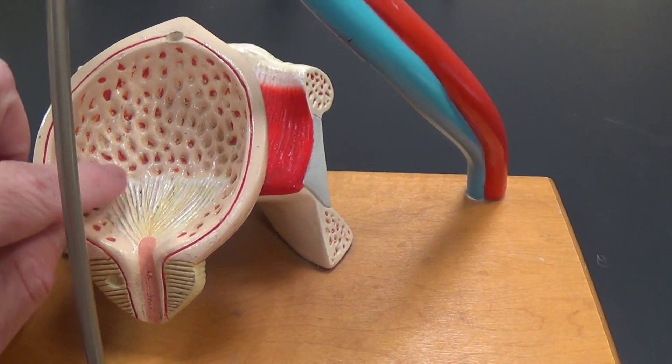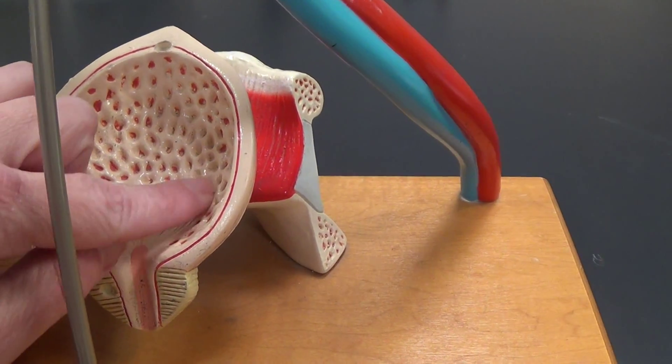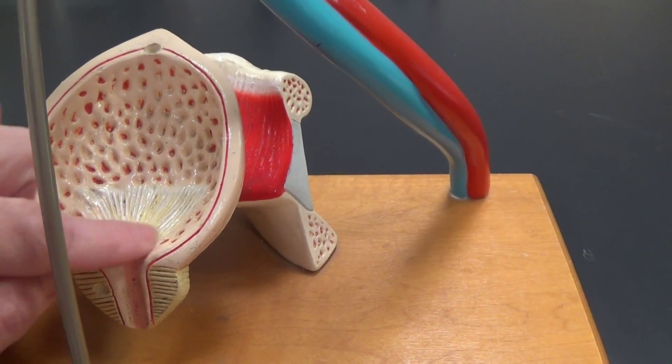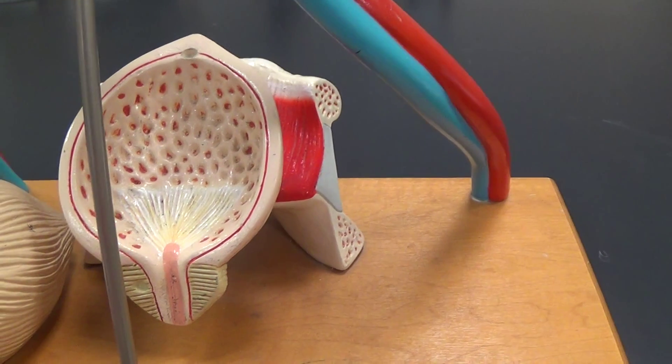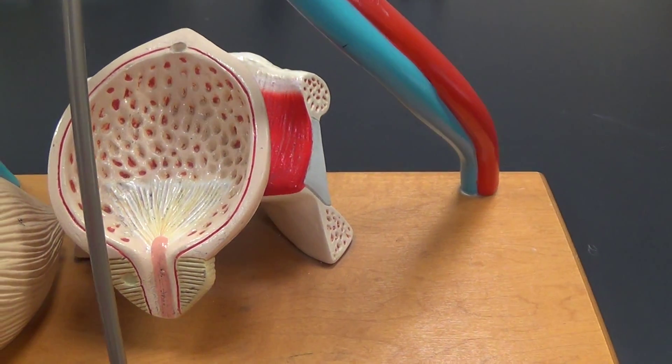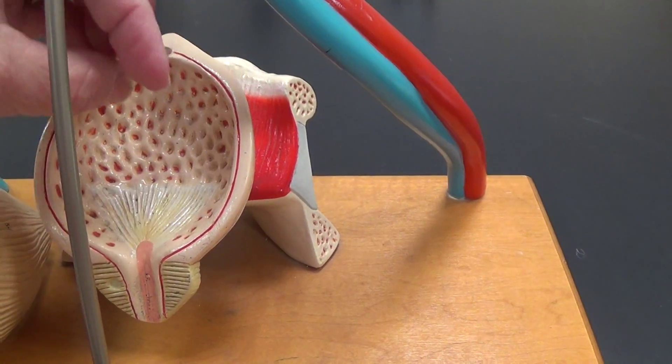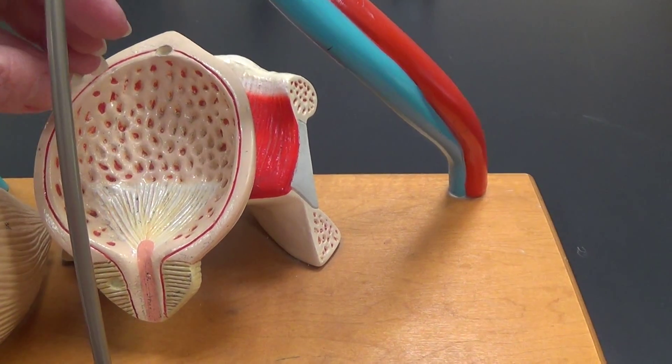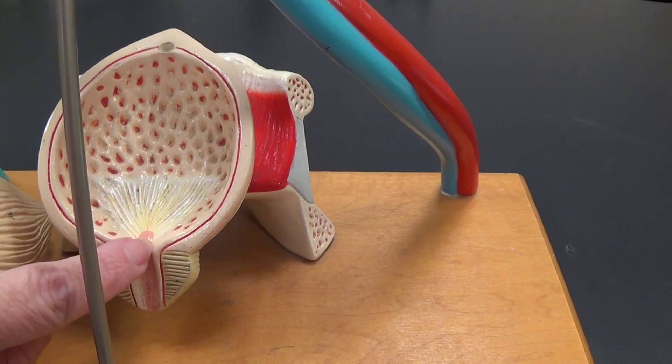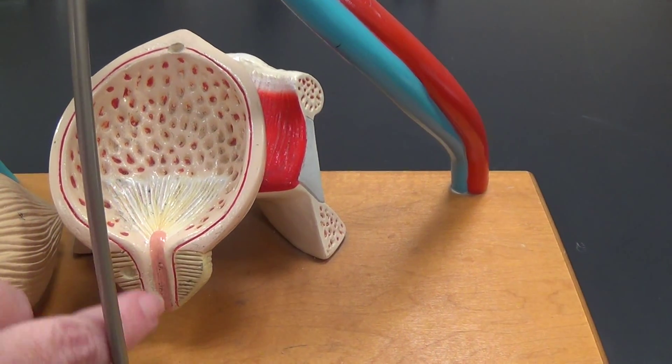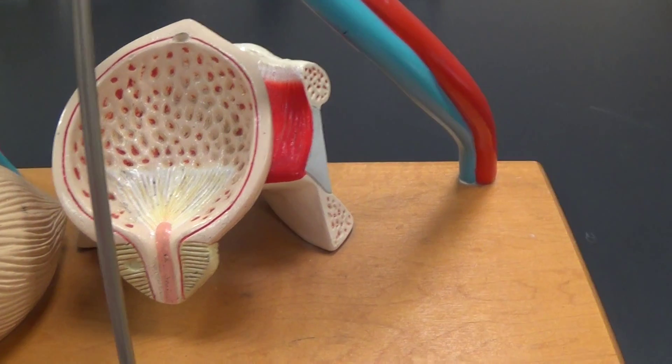Now, on the inside here, this area that is striped in nature and triangular in shape is called the trigon. This is part of the bladder that is actually fixed in location. The rest of the bladder has the ability of expanding and contracting, depending on how much urine it's holding. And then in the middle of the prostate here, we have the urethra, which is draining the kidney.